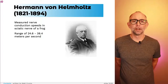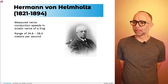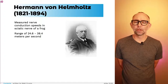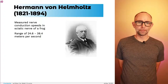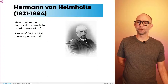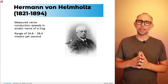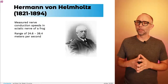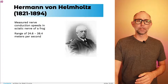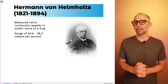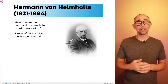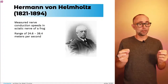This is a question that von Helmholtz was interested in. He was one of the first people to measure nerve conduction speeds. For example, he was able to show that the sciatic nerve of a frog had a conduction speed of about 24.6 to 38.4 meters per second — a really interesting finding showing that conduction speed in a nerve is not infinitely fast.